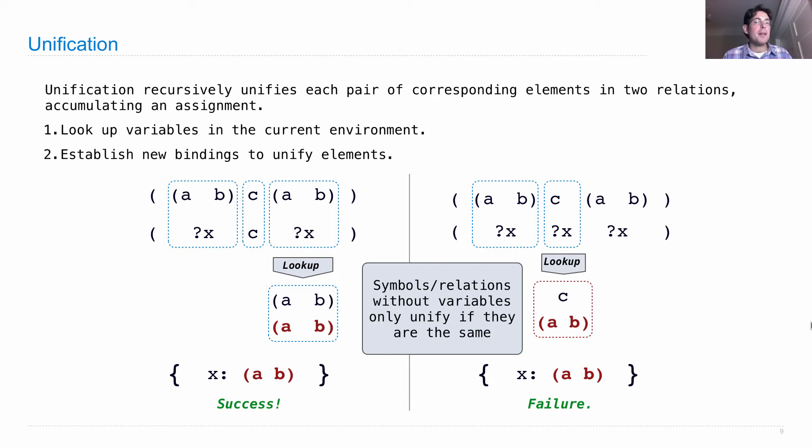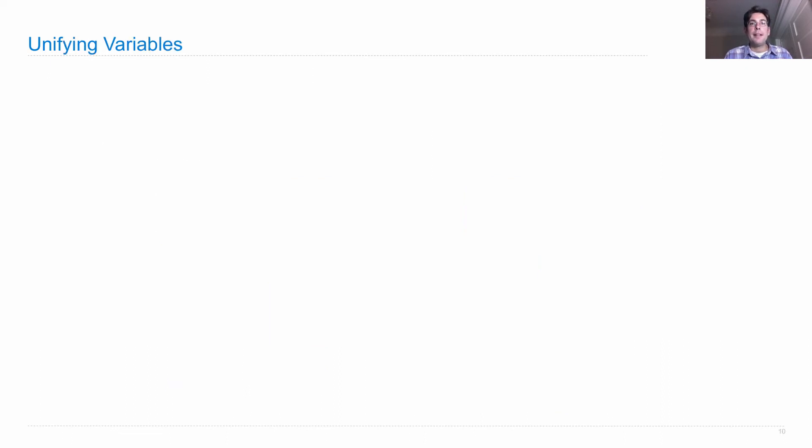So this is a computational process that does pattern matching. Now what happens if you have variables in both sides? Two relations can contain variables on both sides and we can still unify. Sometimes it works out and sometimes it doesn't. Let's say I want to unify two patterns where the first one says I just have to repeat something twice. I don't know whether this is a symbol or a list or a list of lists. It's just something repeated twice.